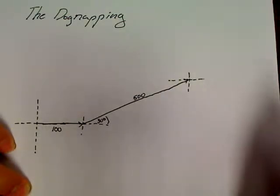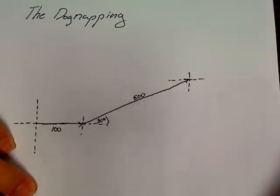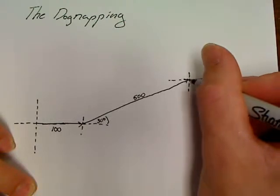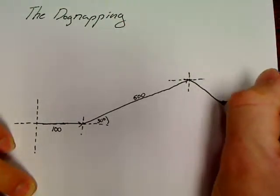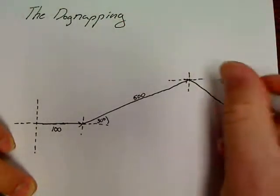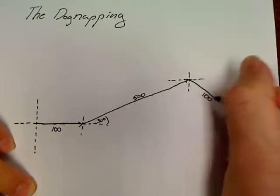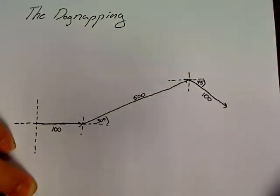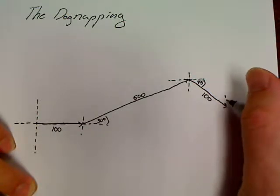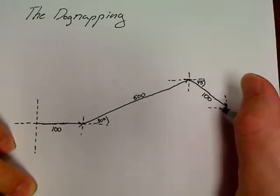Alright, so when he gets there, he finds a bucket of Kentucky Fried Chicken that he quickly eats. Let's see, his next direction is 45 degrees south of east, 100 kilometers. So 45 degrees south of east for 100 kilometers. So 100 at 45 degrees south of east. Now let's see what happens next.